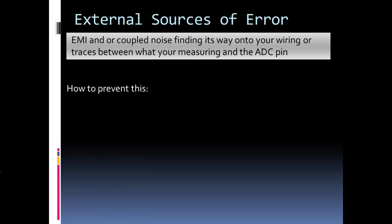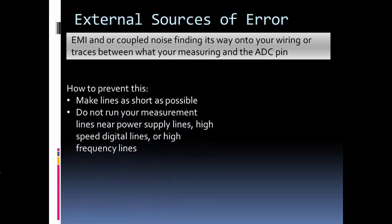So how do we prevent EMI and noise from getting on our circuit run or a wire that's connected to our ADC that's going to give us noisy readings? Well, one thing we do is we make our measurement wiring or our circuit runs as short as possible. So that's sort of a no brainer. Do not run your measurement near power supply lines, high speed digital lines or high frequency lines. So this has to do with a lot of the coupled noise. But the idea is if you have a power supply wire, don't wrap your ADC measurement wire around your power supply wire. If you have a Bluetooth module on your design, don't put your measurement wires right next to where the antenna is. So just things like that.